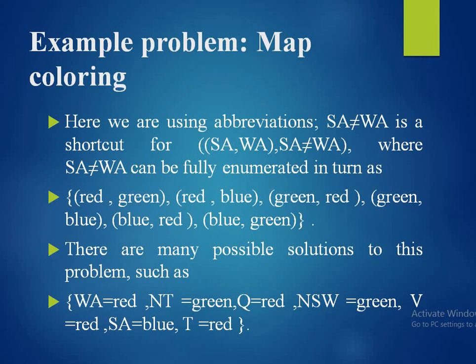Here we use abbreviations: SA≠WA is a shortcut for the constraint (SA, WA) where SA≠WA, which can be fully enumerated as {(red,green), (red,blue), (green,red), (green,blue), (blue,red), (blue,green)}. There are many possible solutions, such as WA=red, NT=green, Q=red, NSW=green, V=red, SA=blue, T=red.